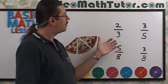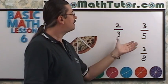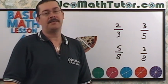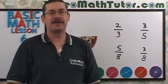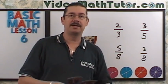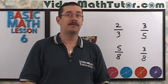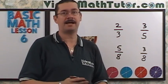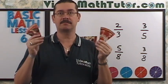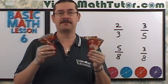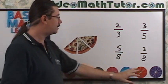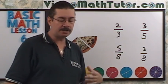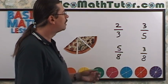But now, what about something like 2 thirds compared with 3 fifths? You can break out some pizza slices and do some comparisons, but what if we have fractions that don't have matching fraction circles? So we need to find a systematic way of doing this.